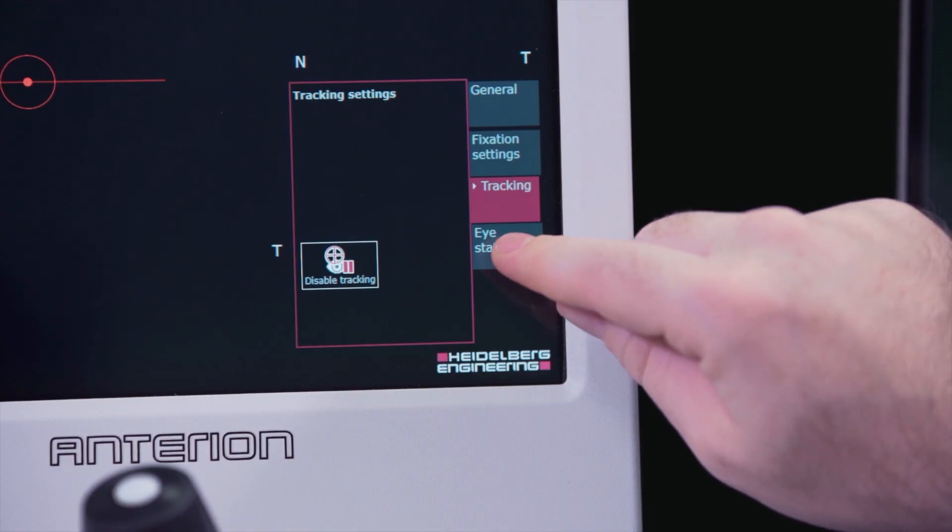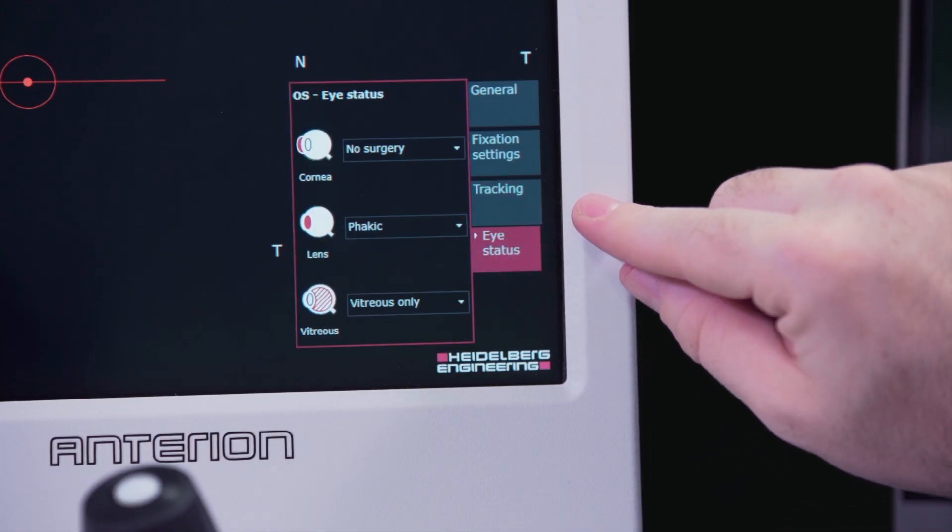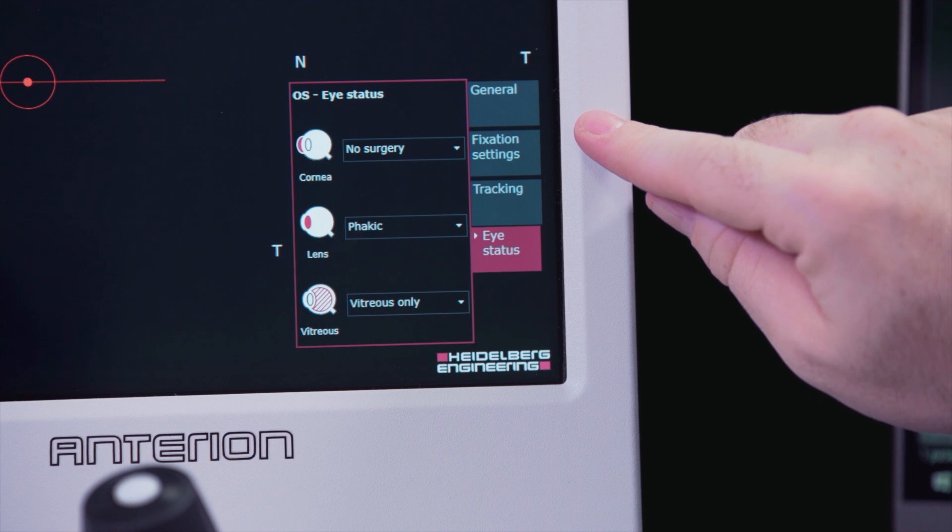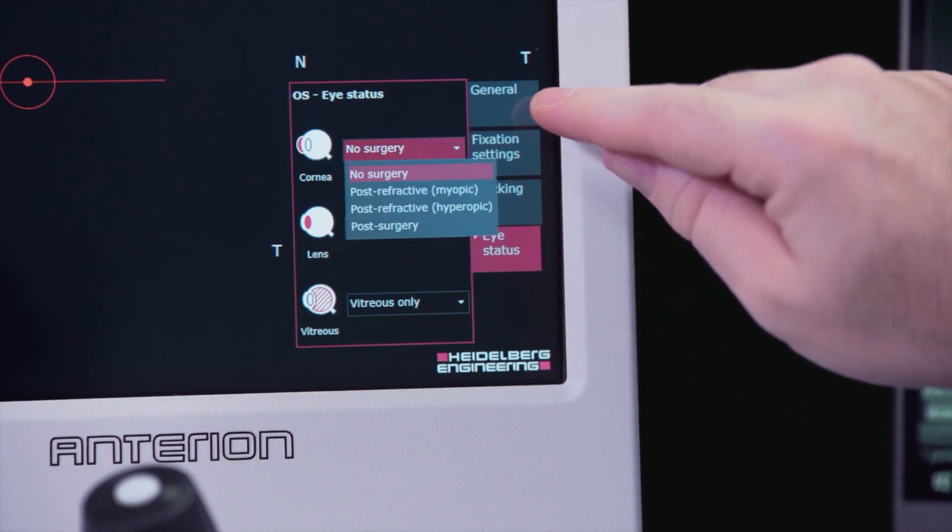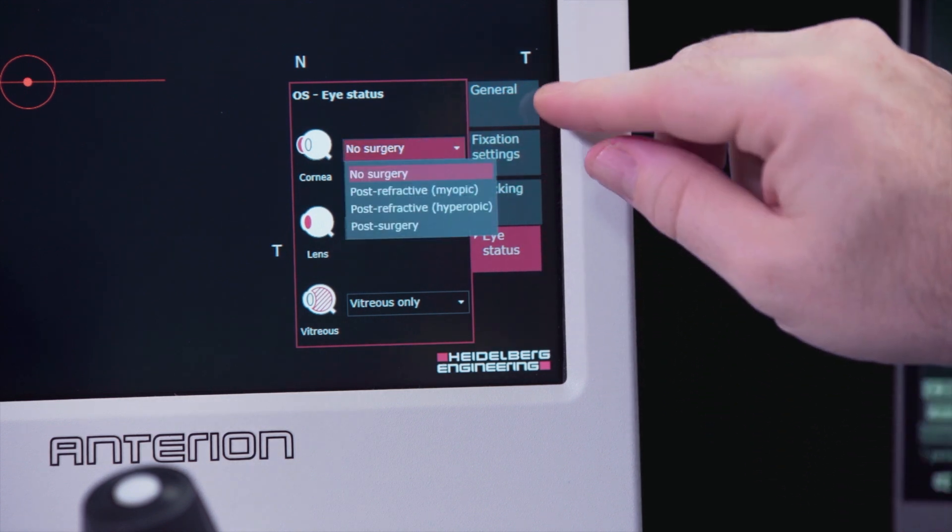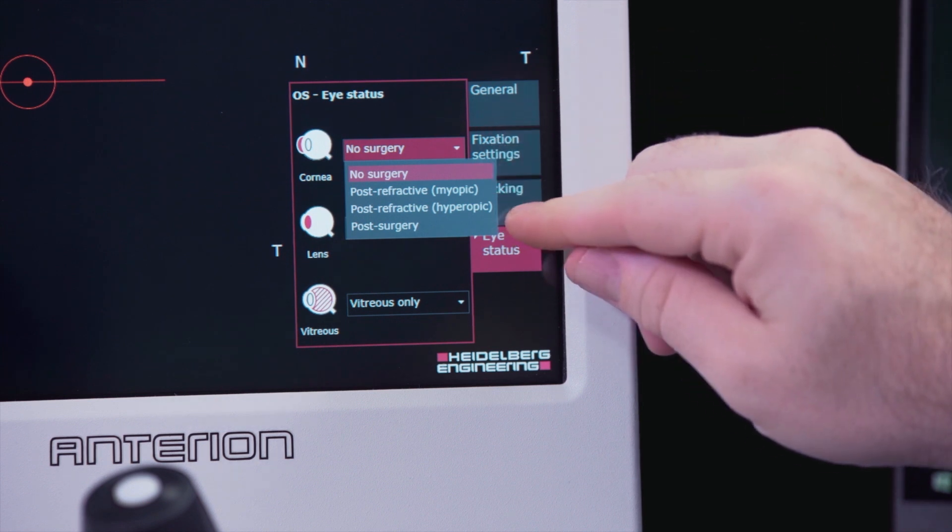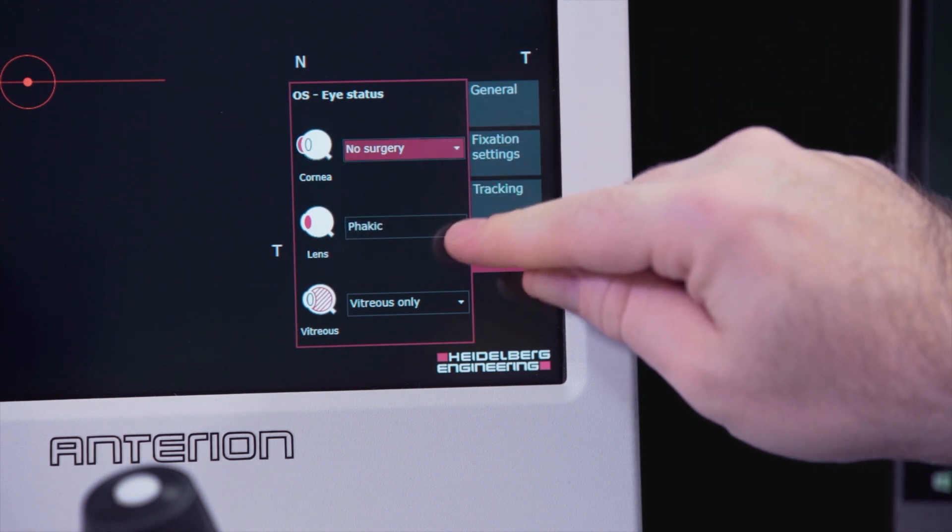Choose the cataract app from the touch screen. The eye status tab allows you to record surgery on the cornea, lens, or vitreous. This can be done post-capture or when adding a new patient in the software prior to acquisition.